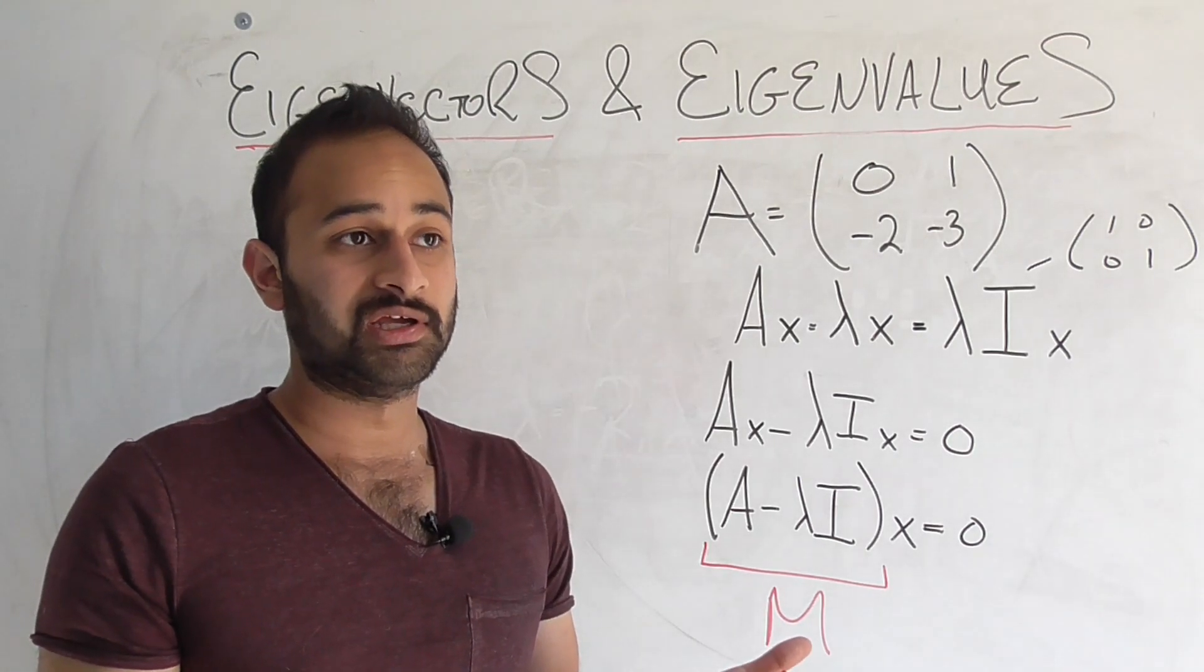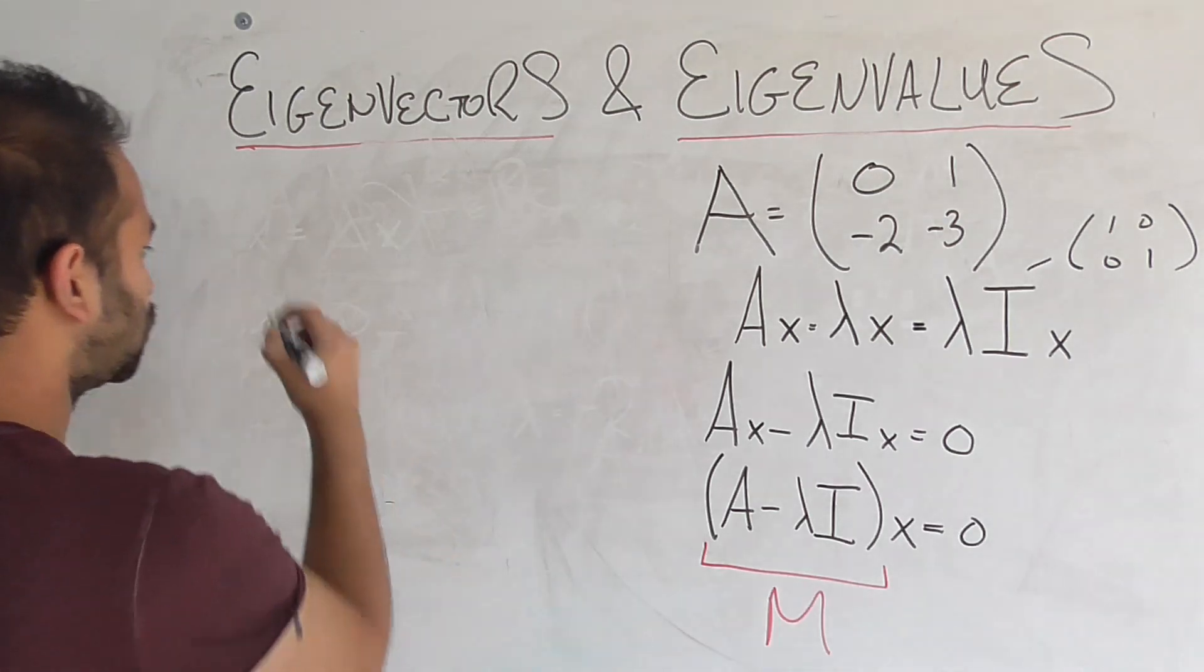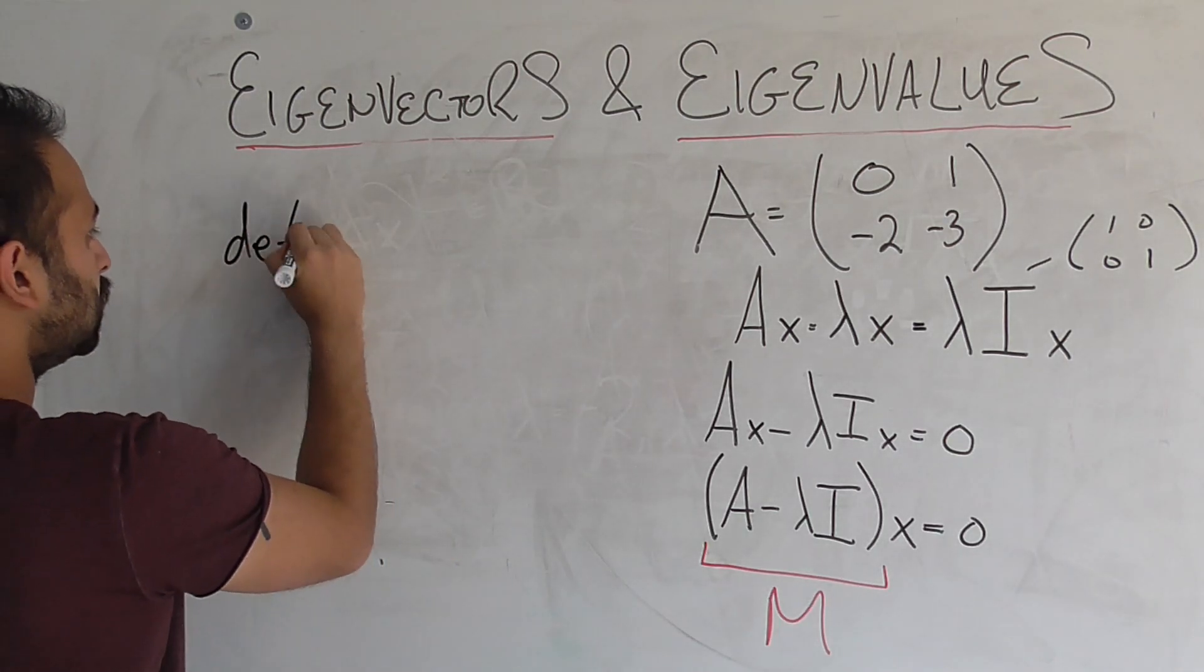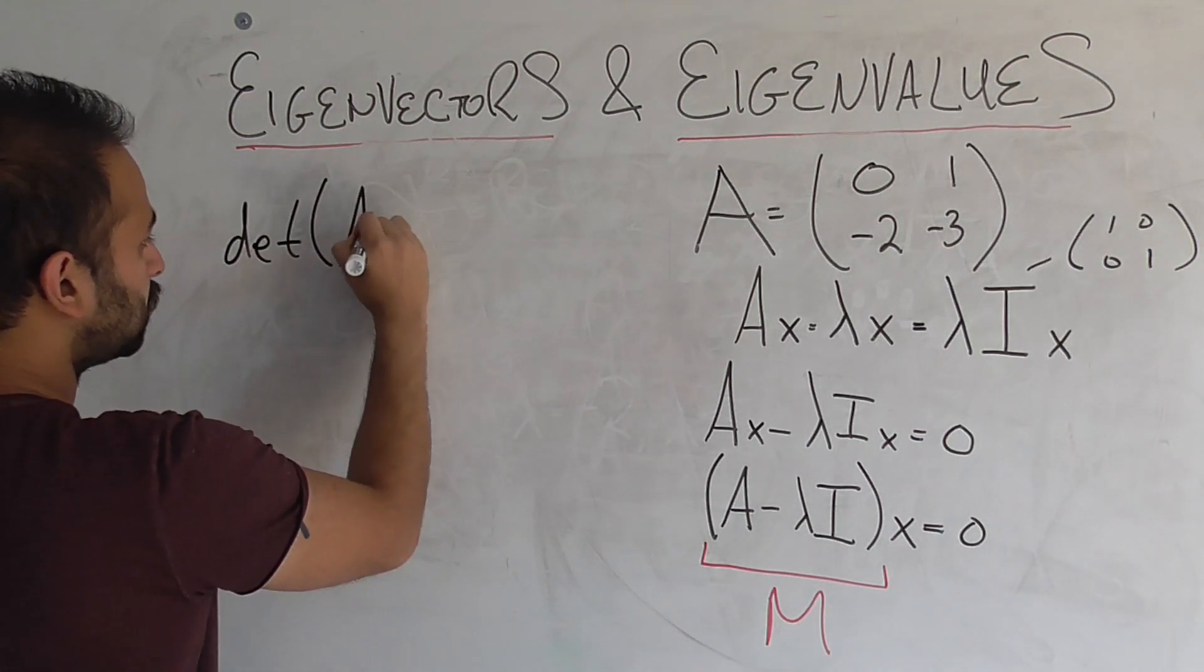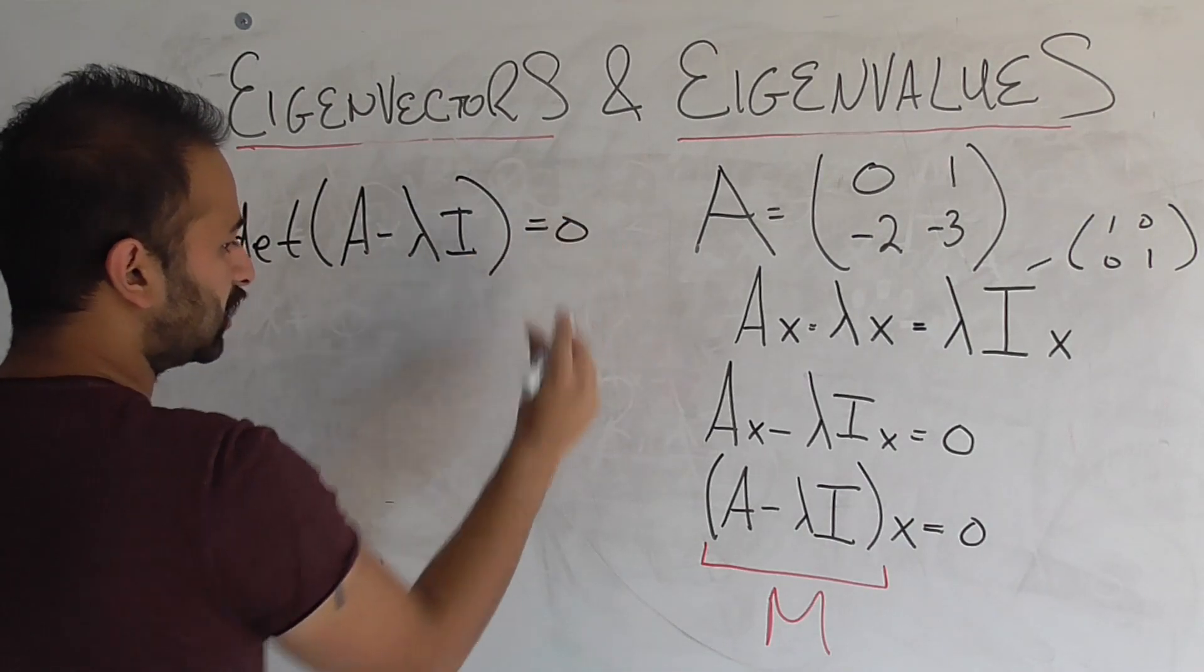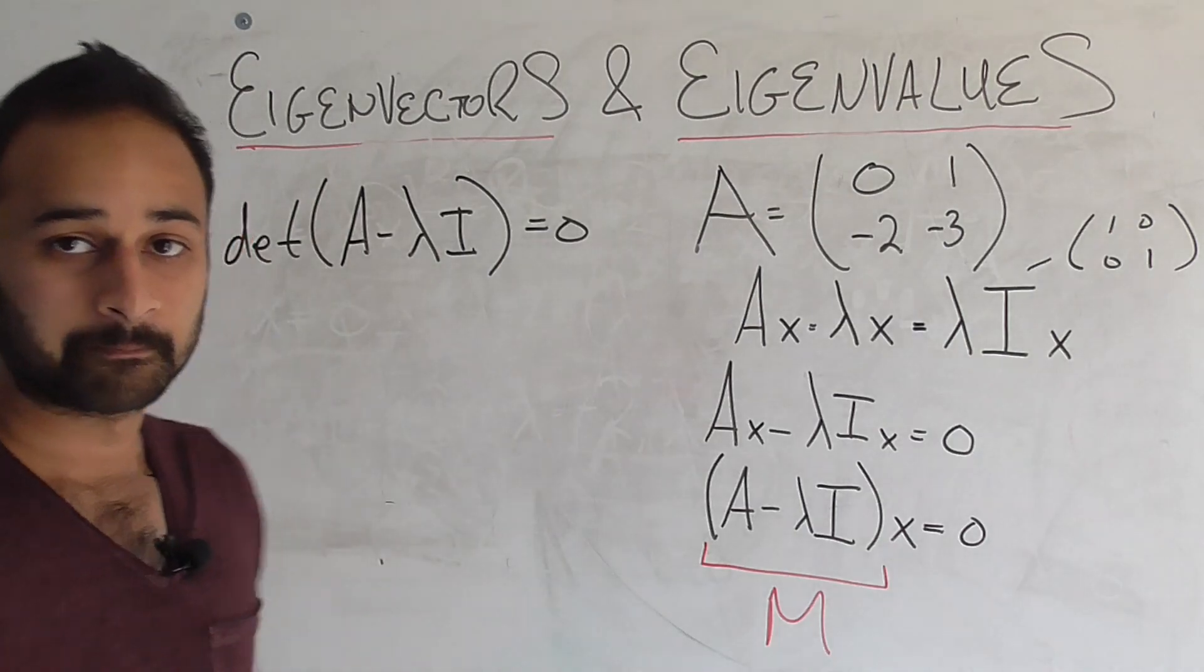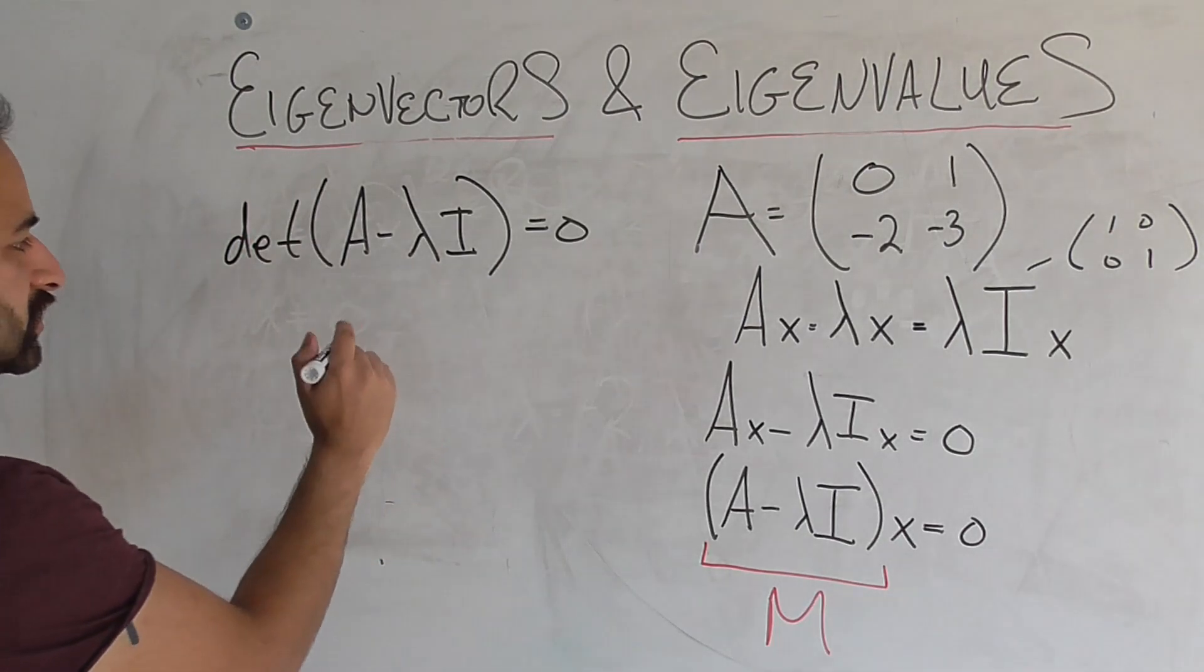So we know for a fact that the determinant, which we write as DET, determinant of A minus lambda I, has to be equal to 0 because of the non-invertibility of that matrix as we saw down here. All right, cool. So what do we do with this?